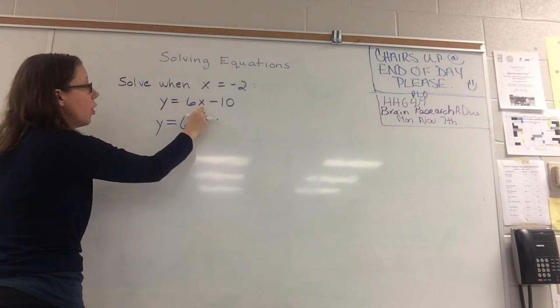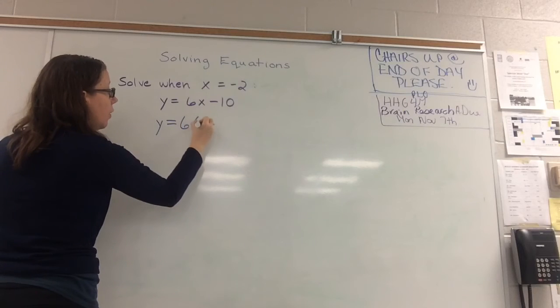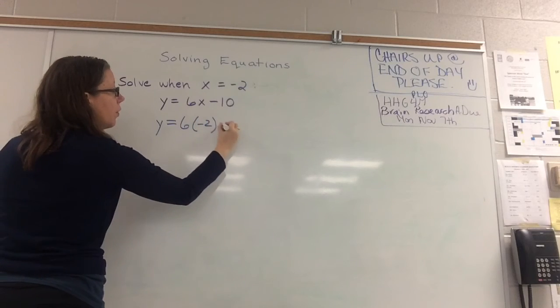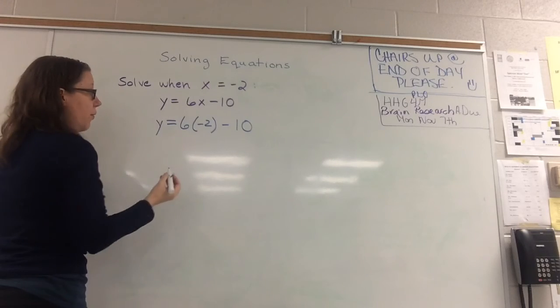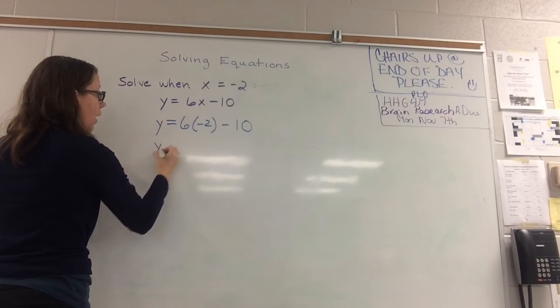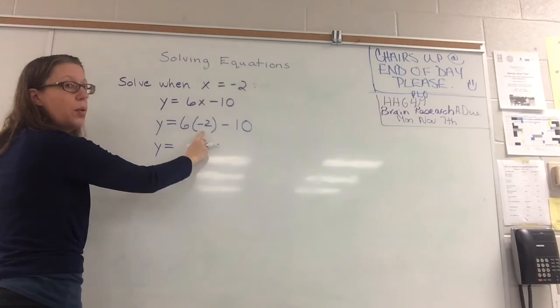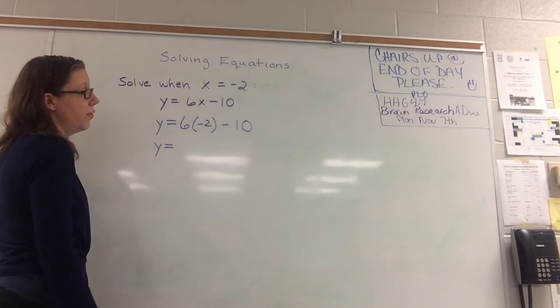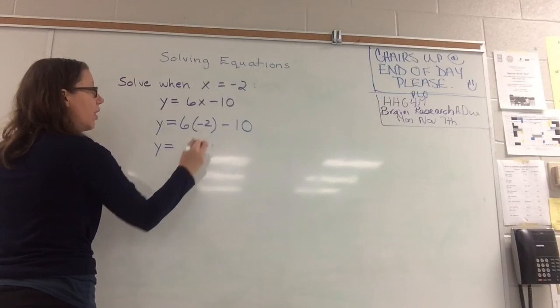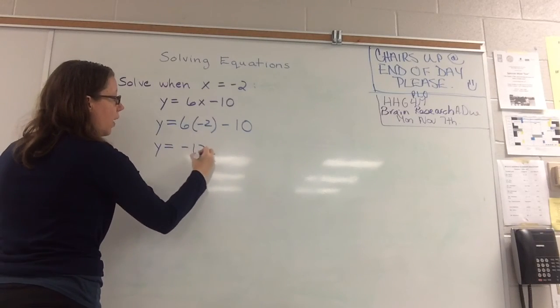So instead of 6 times x, we have 6 times negative 2. Now we just go through and follow our BEDMAS laws. y equals, do we have brackets? Yes, but we can't do anything with what's in the brackets. Do we have exponents? No. Do we have dividing? No. Do we have multiplying? Yes. 6 times negative 2 is negative 12.